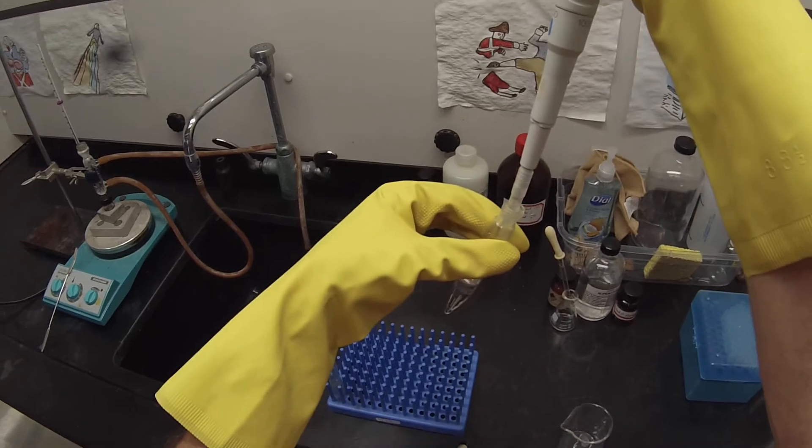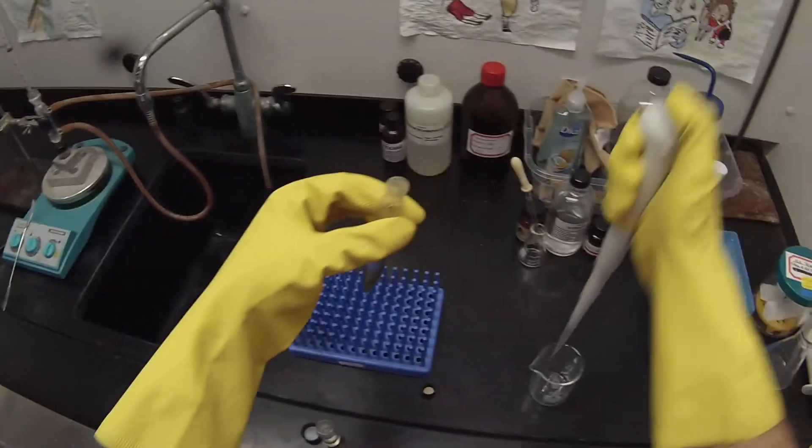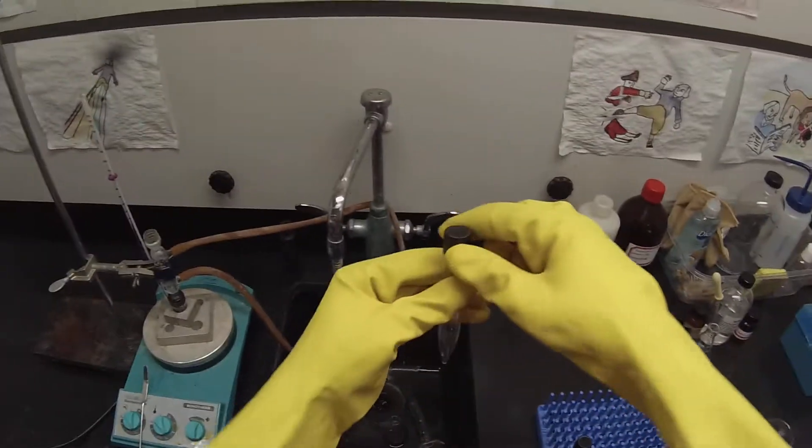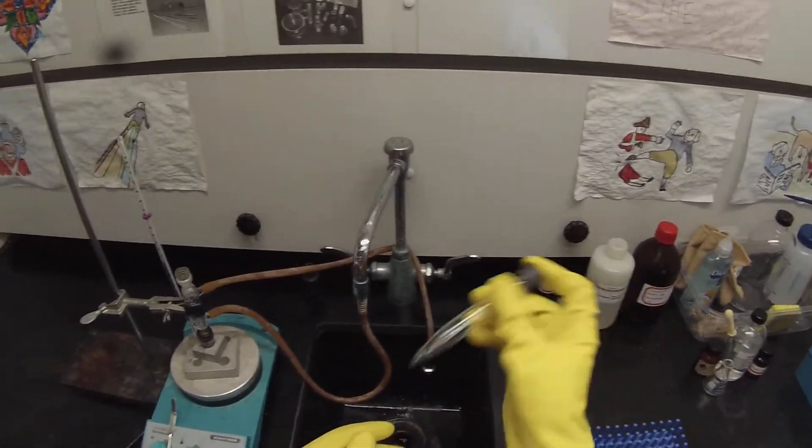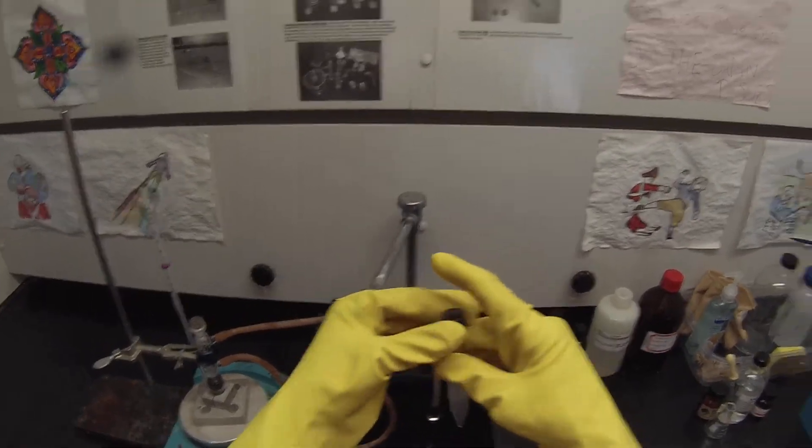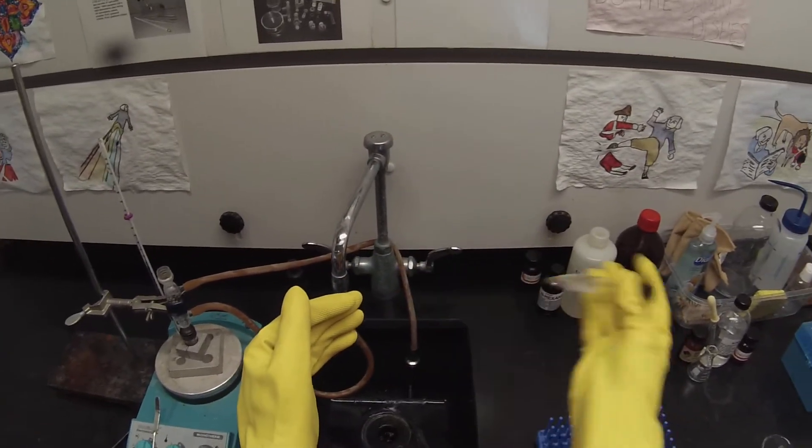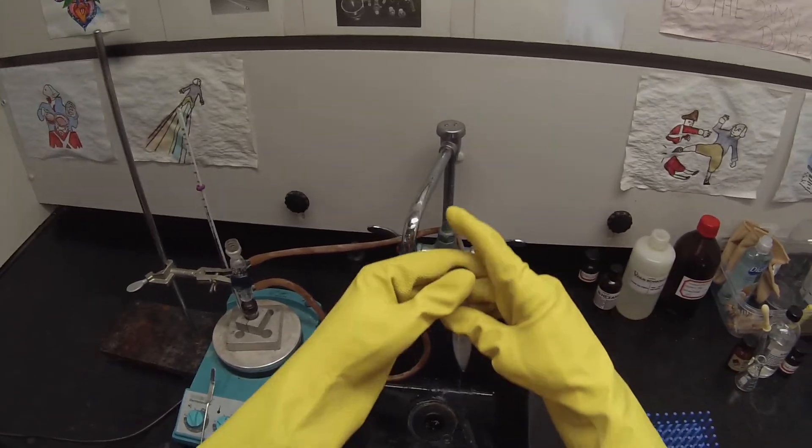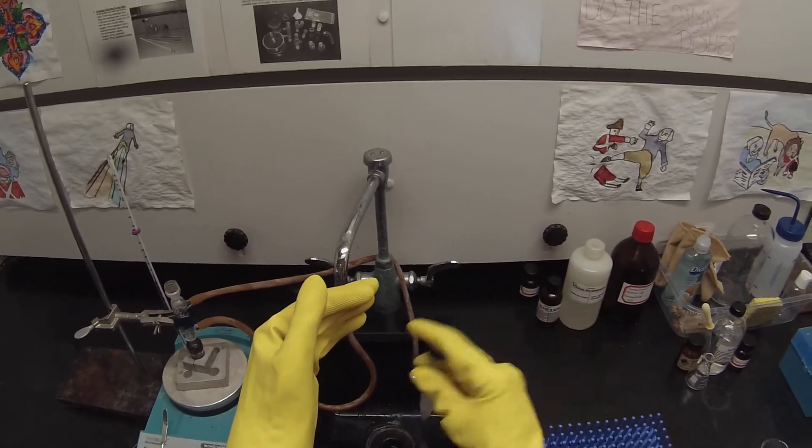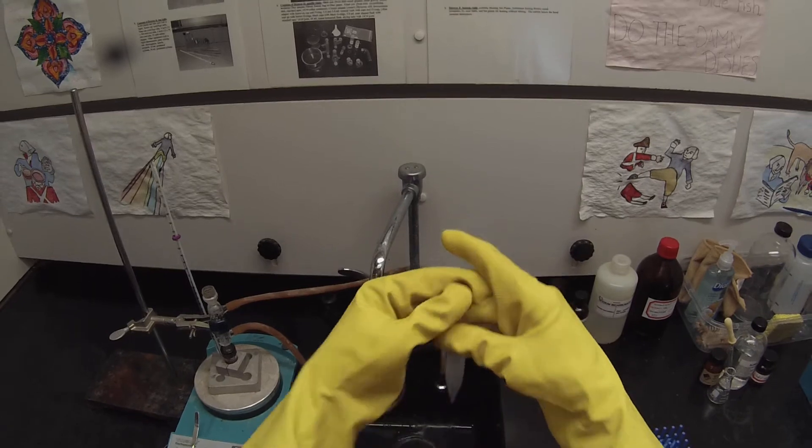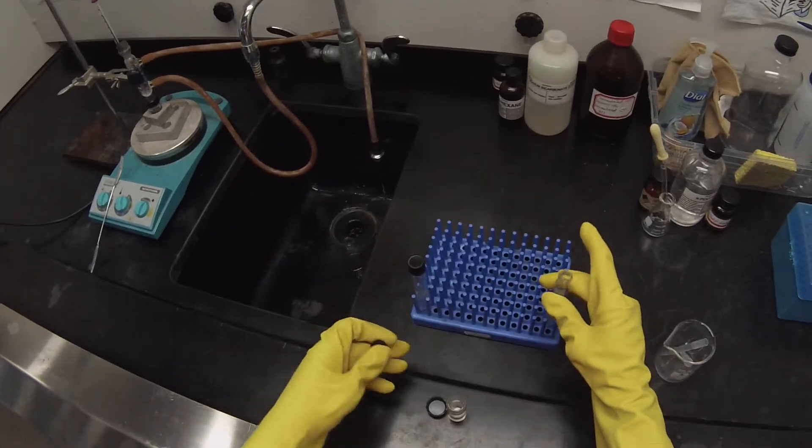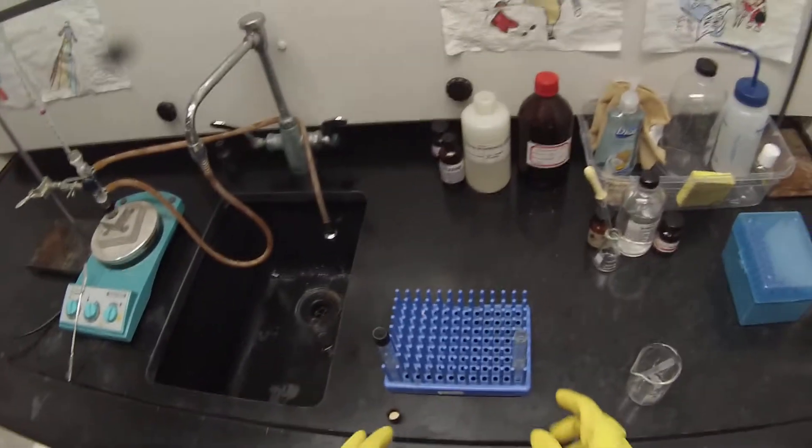So we're adding the t-butanol. Get rid of the tip. Set this guy down. And then I'm just going to shake that back and forth. Give it a little vent. Shake it back and forth. And I just want to do this for about 15 seconds. And then I'm going to let it settle. Just enough that I can pipette that top layer without getting any of the bottom layer.